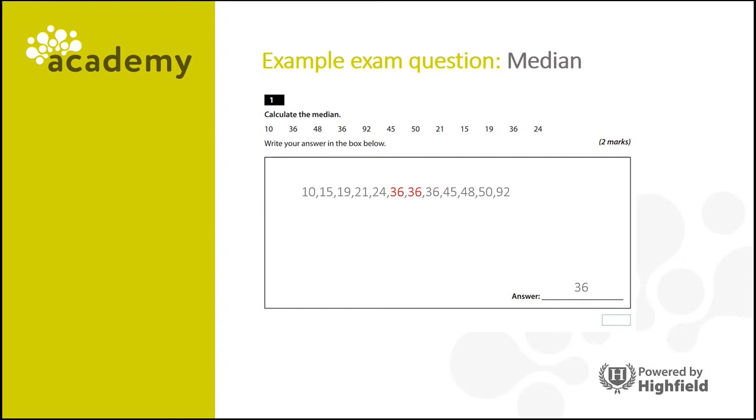Did you get it right? Now in this case, there's an even number of values, so there are two middle numbers. In this case, it's 36 and 36. Now there's no need to add those two together and divide them by 2 because you'd still have the answer 36. So in this case, the median is 36.